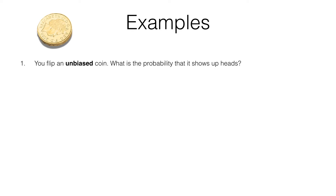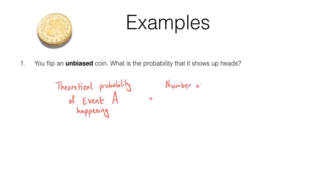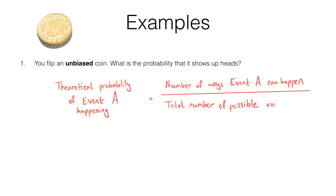There's a formula that tells us how to work out the theoretical probability of an event happening. The theoretical probability of an event A happening is the number of ways that event A could happen over the total number of possible outcomes, and this gives us our answer as a fraction.